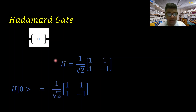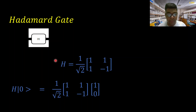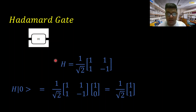Just substitute the Hadamard matrix in place of H, then write the corresponding column vector for |0⟩. If you work out that simple matrix multiplication, this is what you actually get. Let's carry this forward to the next slide.